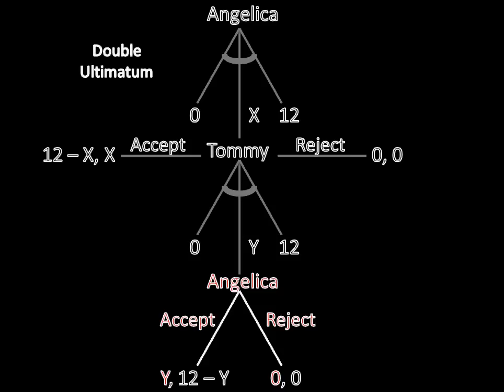And we see here that Tommy does better by offering Angelica some number of cookies. For example, if he offered her six, then she would accept and Tommy would get six more cookies than had Angelica rejected him. But we can also see that he does even better by only giving her one cookie and keeping the other 11 for himself.